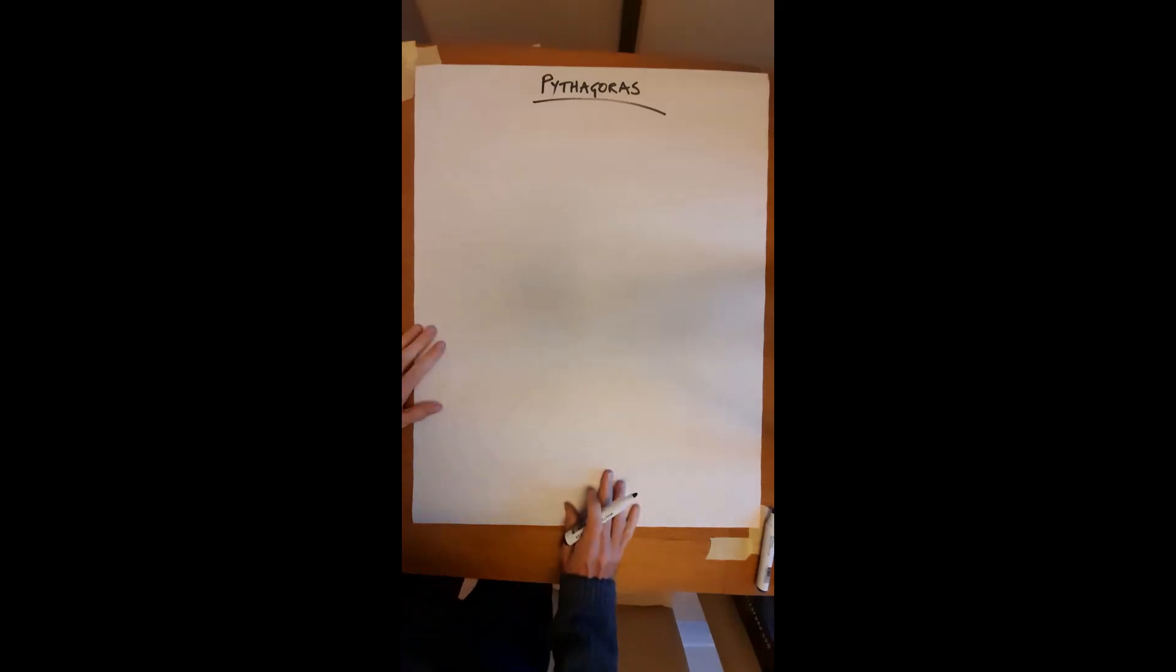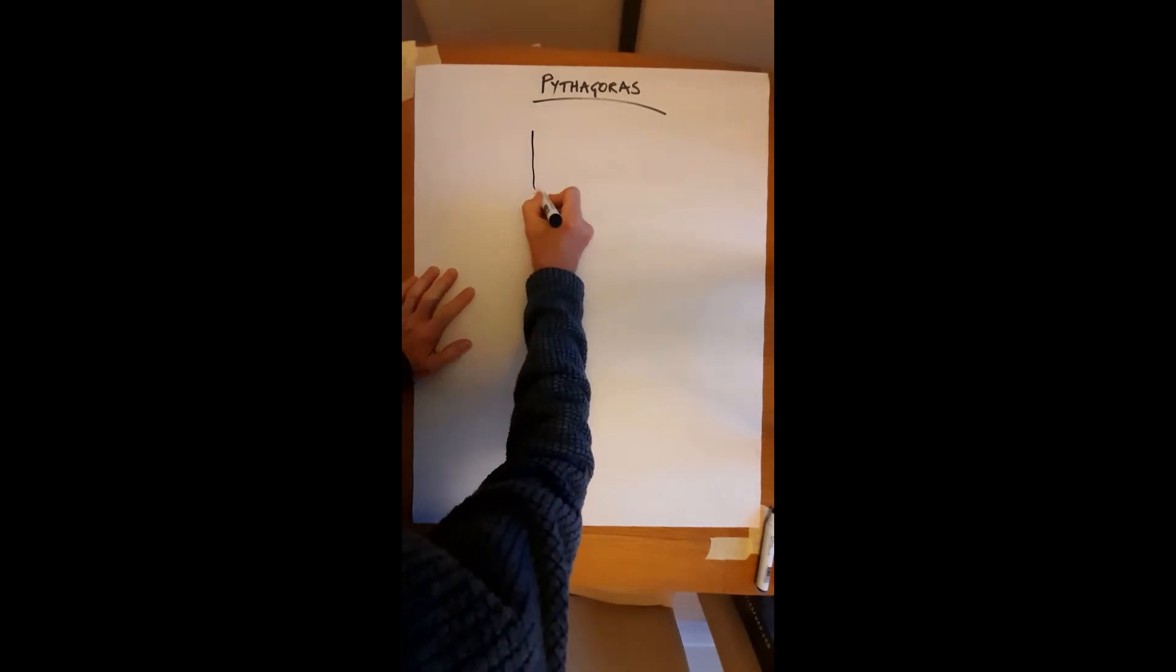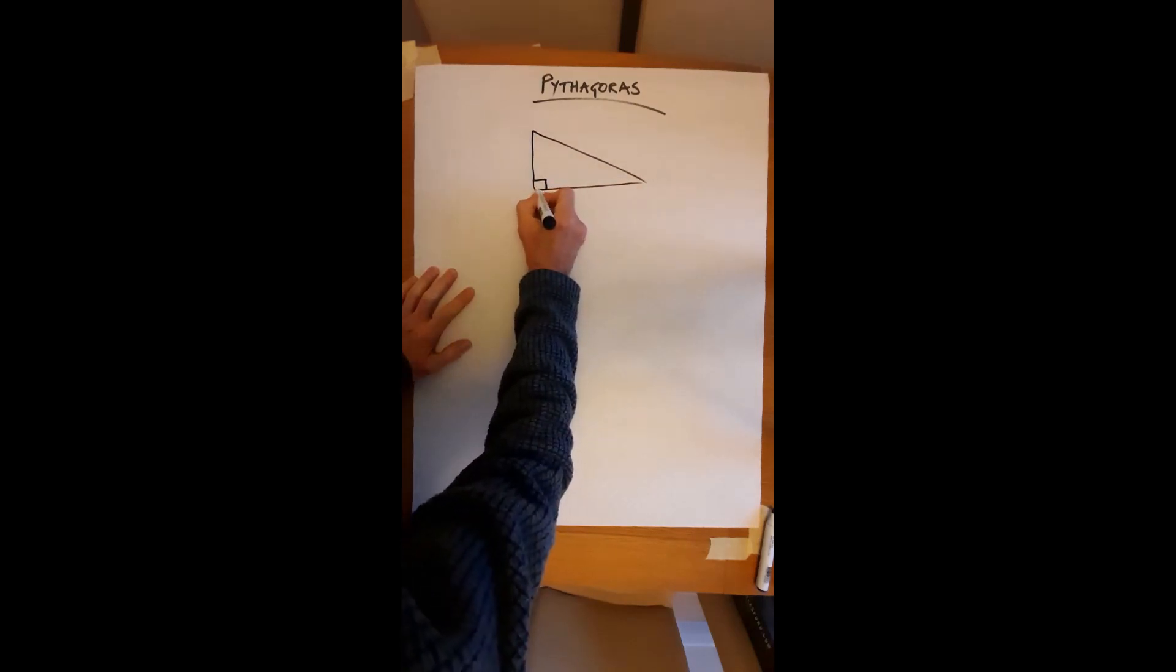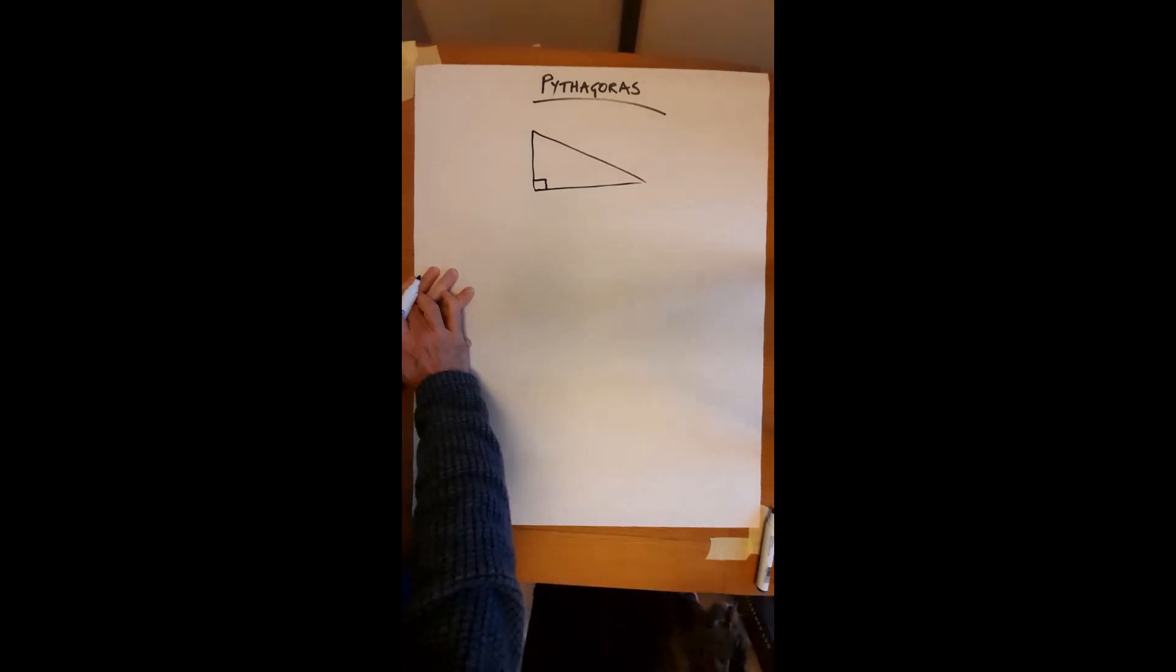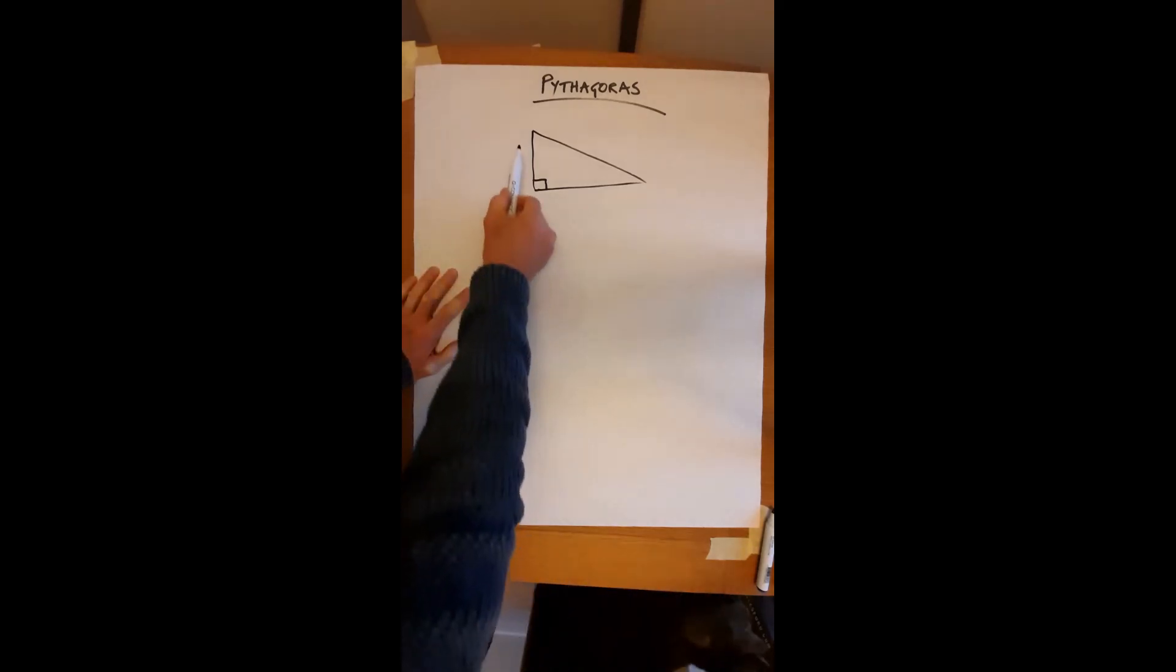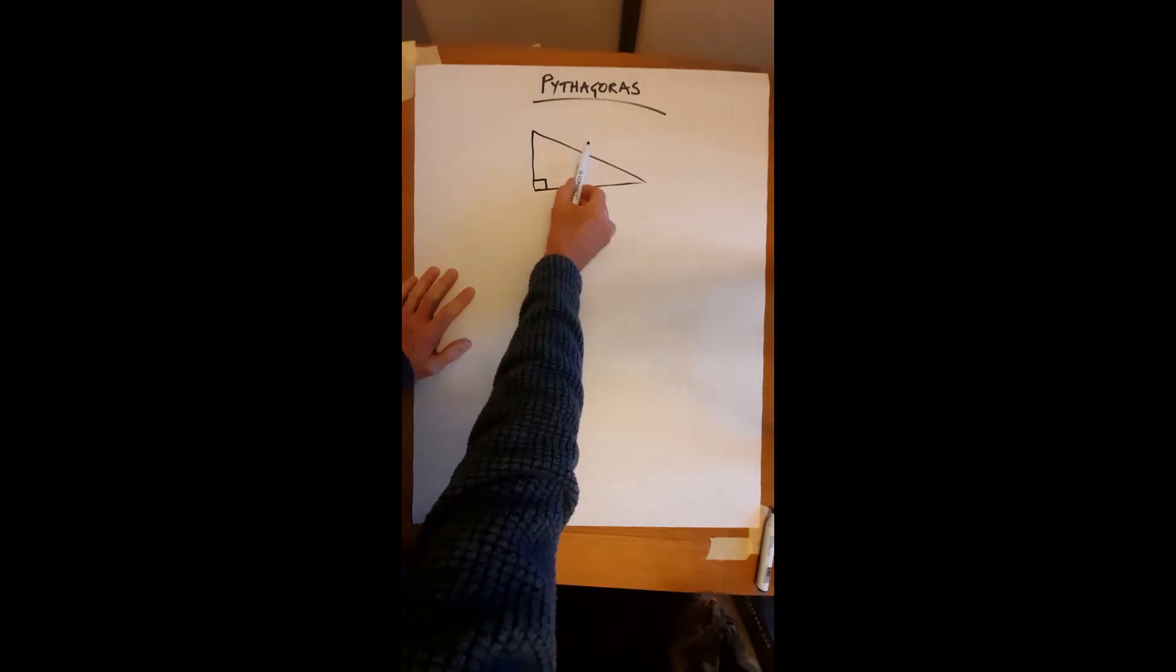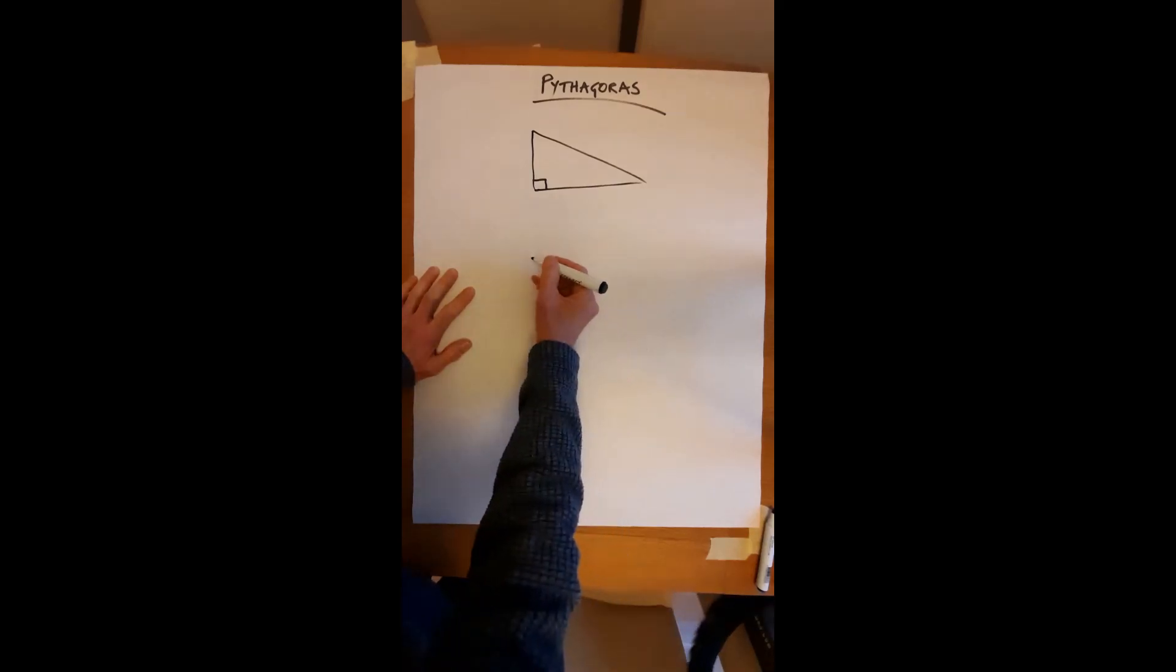A quick explanation of Pythagoras's theorem. So Pythagoras's theorem applies to right-angled triangles. Here is your right angle, 90 degrees, and Pythagoras allows us to perform some really simple calculations. If we know two sides of a triangle, then we can use Pythagoras to calculate the third side, and it doesn't matter which one we're calculating. I'll take you through examples of that in a couple of moments.